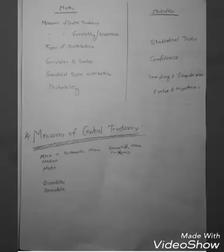Good morning friends. Today we will be discussing the topic of biostatistics from the textbook of PARC. In this video I will be talking about the measures of central tendency, the measures of variability, types of distribution and variables and scales. The rest of the topics will come in another video.